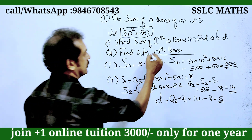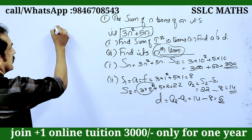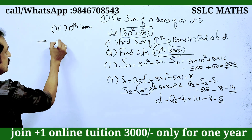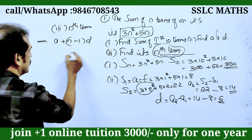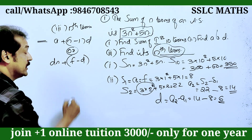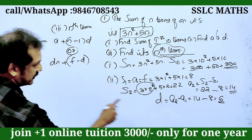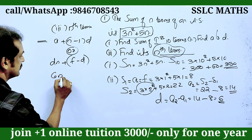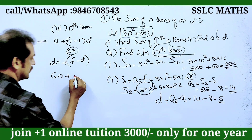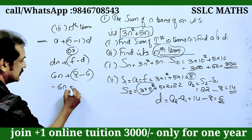Now we have to find the end term. The formula is: Dn equals F plus (n minus 1) times D. So Dn equals 6n. Plus F minus D: F1 is 8, minus D equals 6. Our answer is 6n plus 2.